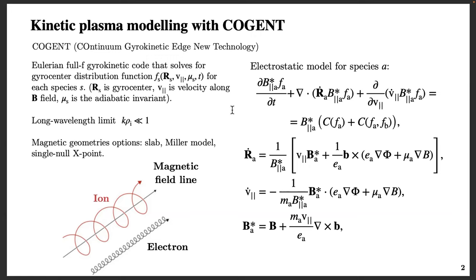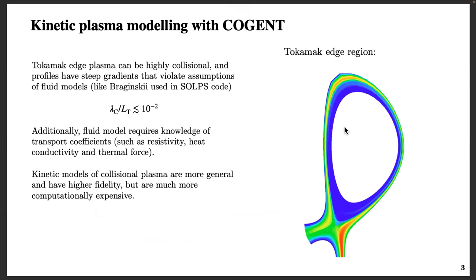My particular work is focused on this right-hand side, which describes interaction of particles due to their Coulomb forces, because plasma is charged. This is not as important in the core of the device where plasma is very hot, but COGENT code can also simulate the near-wall region of the device called the edge of the plasma, where plasma is relatively colder and highly collisional. Therefore, it's important to include this into the kinetic simulations.